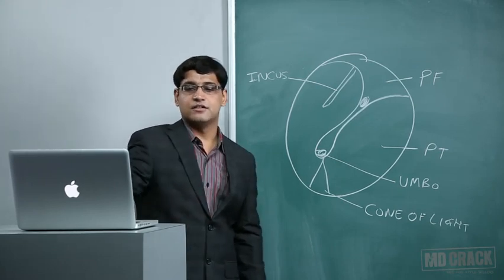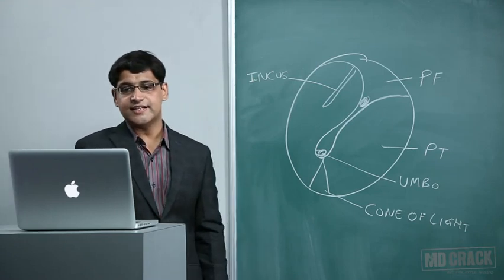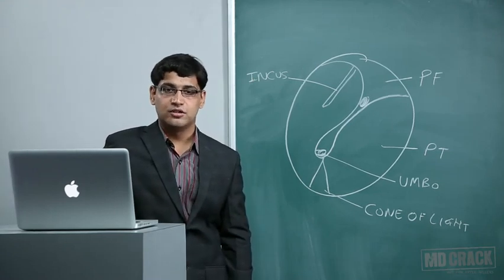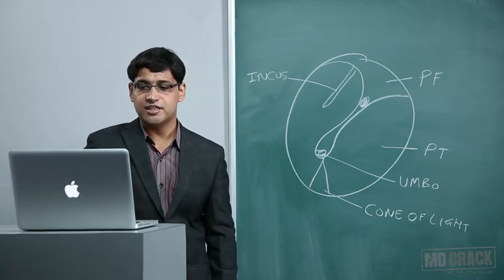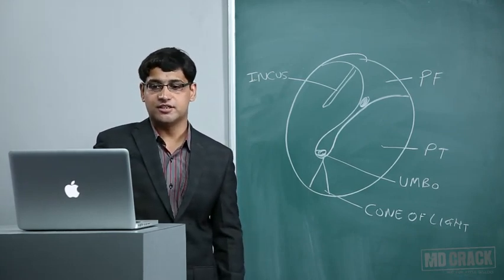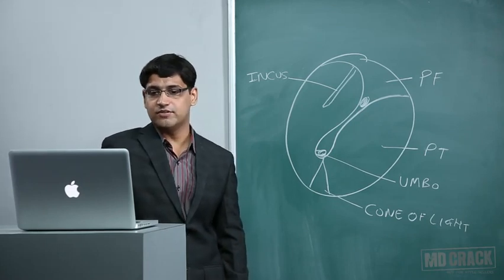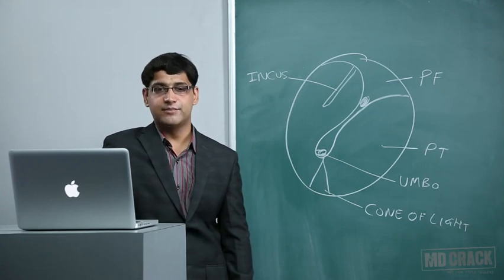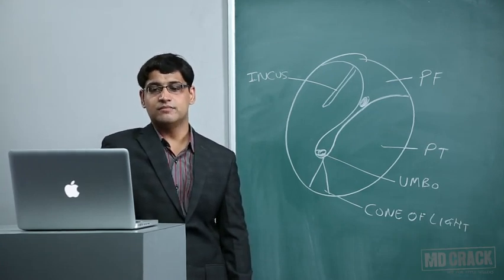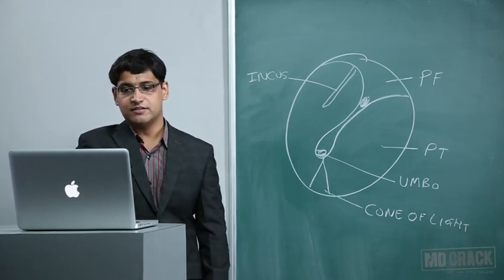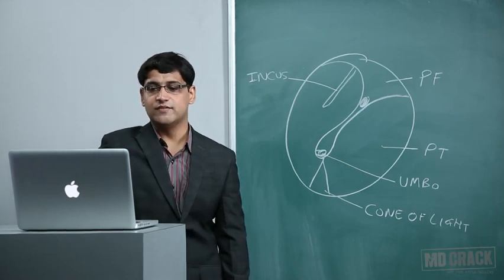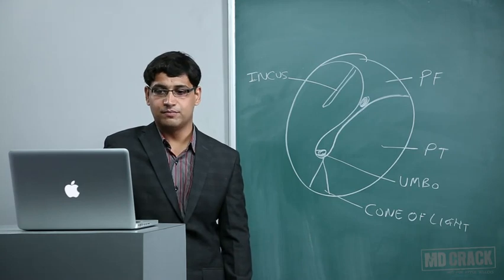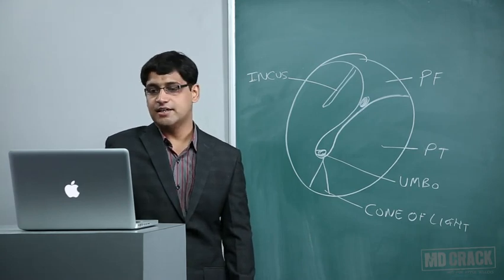The tympanic membrane has three layers. The innermost layer is endoderm, which develops from the first branchial pouch. The middle layer is the fibrous (mesoderm) layer. The outermost layer is ectoderm, which develops from the first branchial cleft. So to remember: pouch gives endoderm, cleft gives ectoderm.